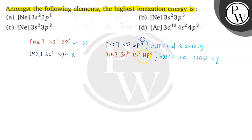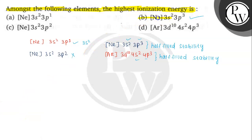We now have two options with half-filled stability: [Ne] 3s² 3p³ and [Ar] 3d¹⁰ 4s² 4p³. In the second case, an extra shell (n=4) is added, meaning it is farther from the nucleus compared to the first. The first configuration is nearer to the nucleus and has greater effective nuclear charge. Therefore, ionization energy will be highest for [Ne] 3s² 3p³. Option B is the correct answer.